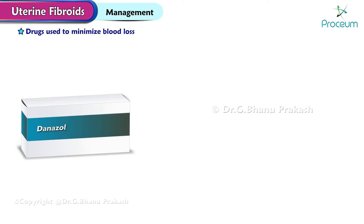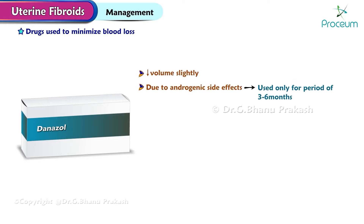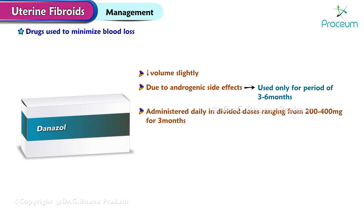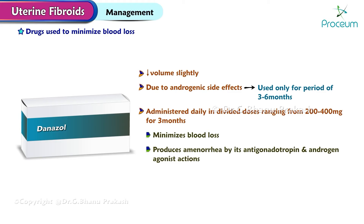Danazole can reduce the volume of a fibroid slightly. Because of androgenic side effects, danazole is used only for a period of 3 to 6 months. Danazole is administered daily in divided doses ranging from 200 to 400 mg for 3 months, minimizing blood loss or even producing amenorrhea by its antigonadotropin and androgen agonist actions.